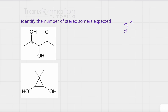Looking at this carbon, it is attached to an OH group, a methyl group on one side, another group to the right, and a hydrogen not shown — since every neutral carbon wants four bonds. This carbon is a stereocenter, so I'll put a star next to it. The next carbon is also attached to OH, a hydrogen, and different groups on the left and right, making it a chiral carbon as well.